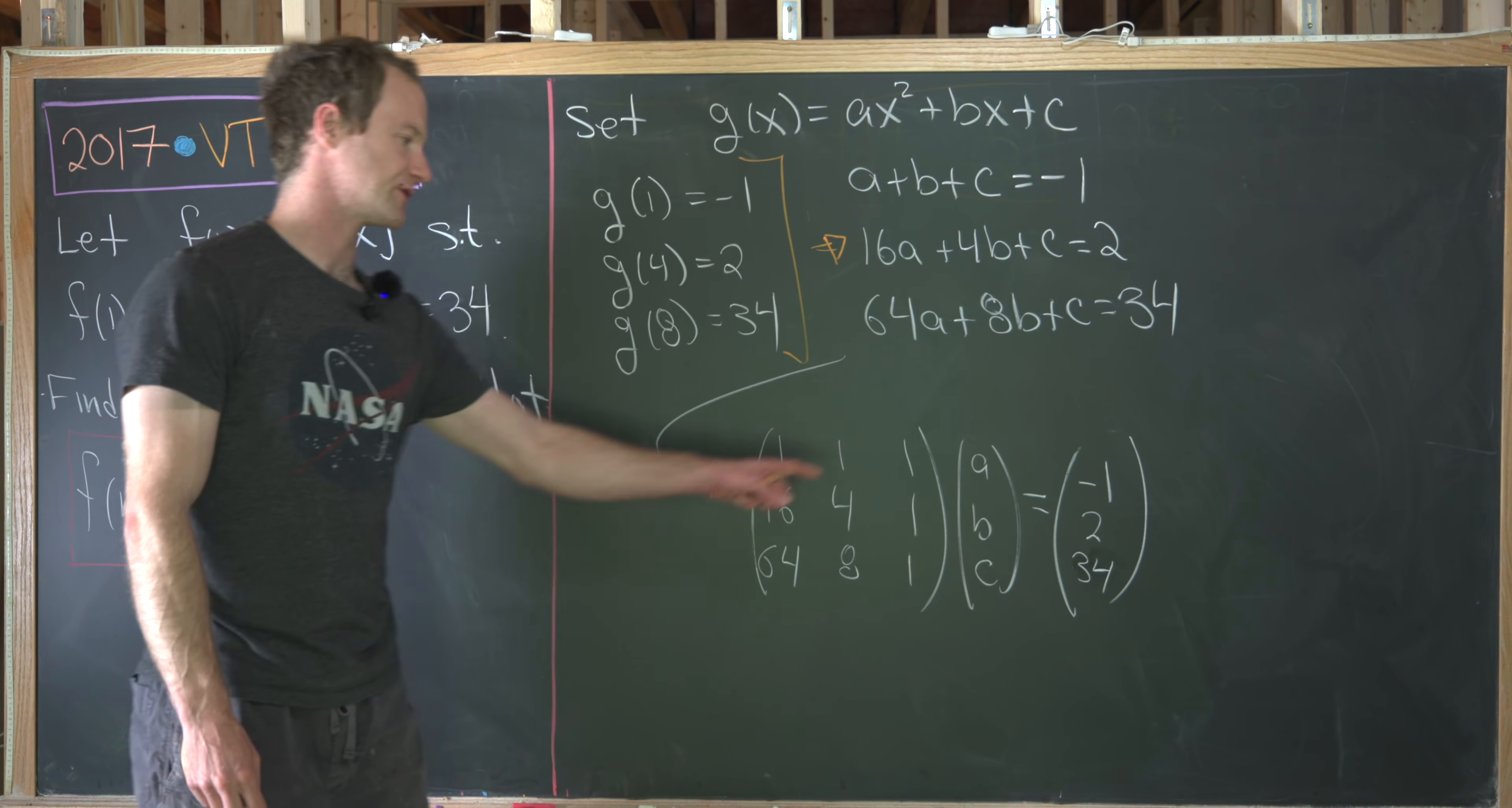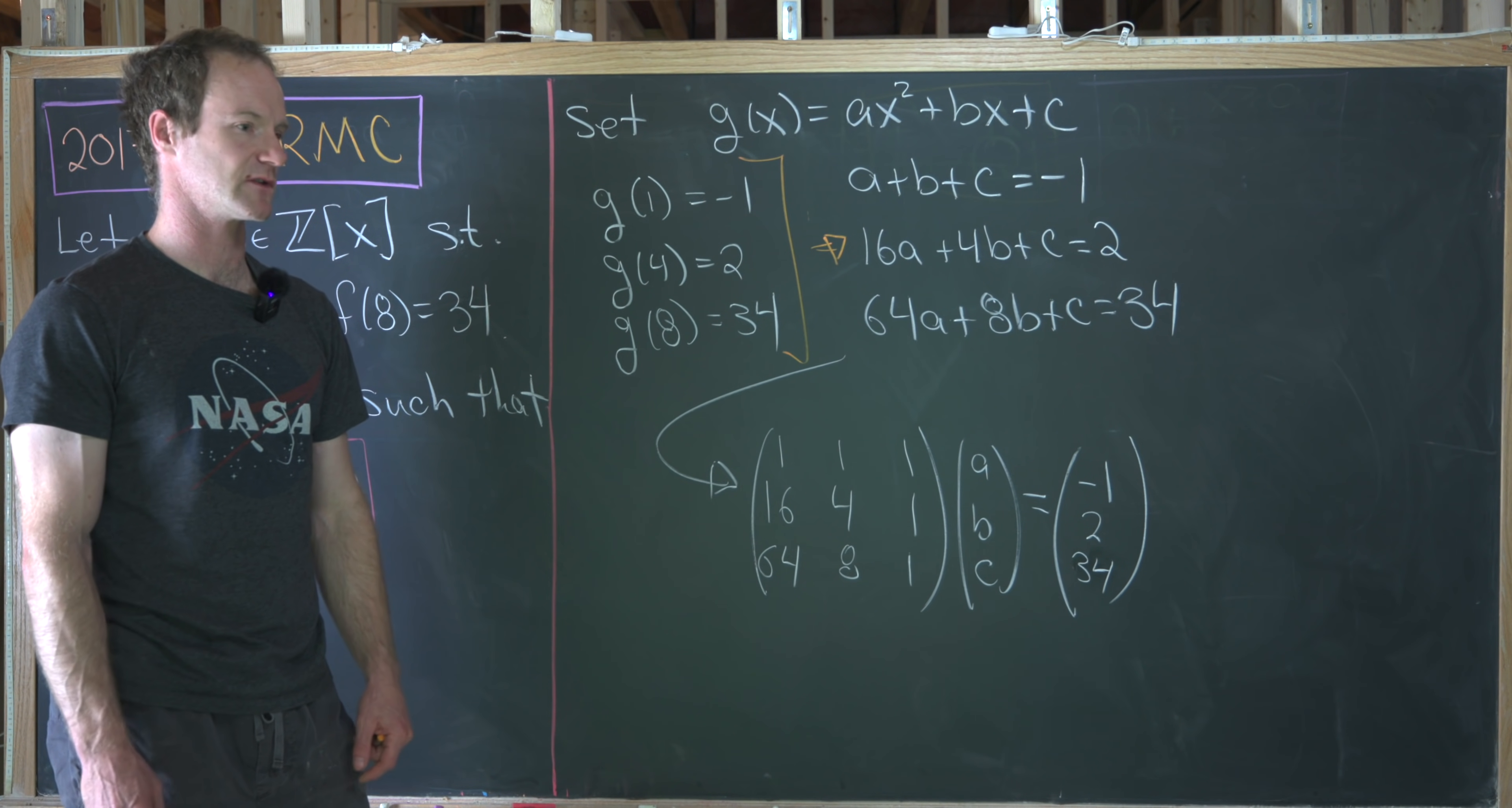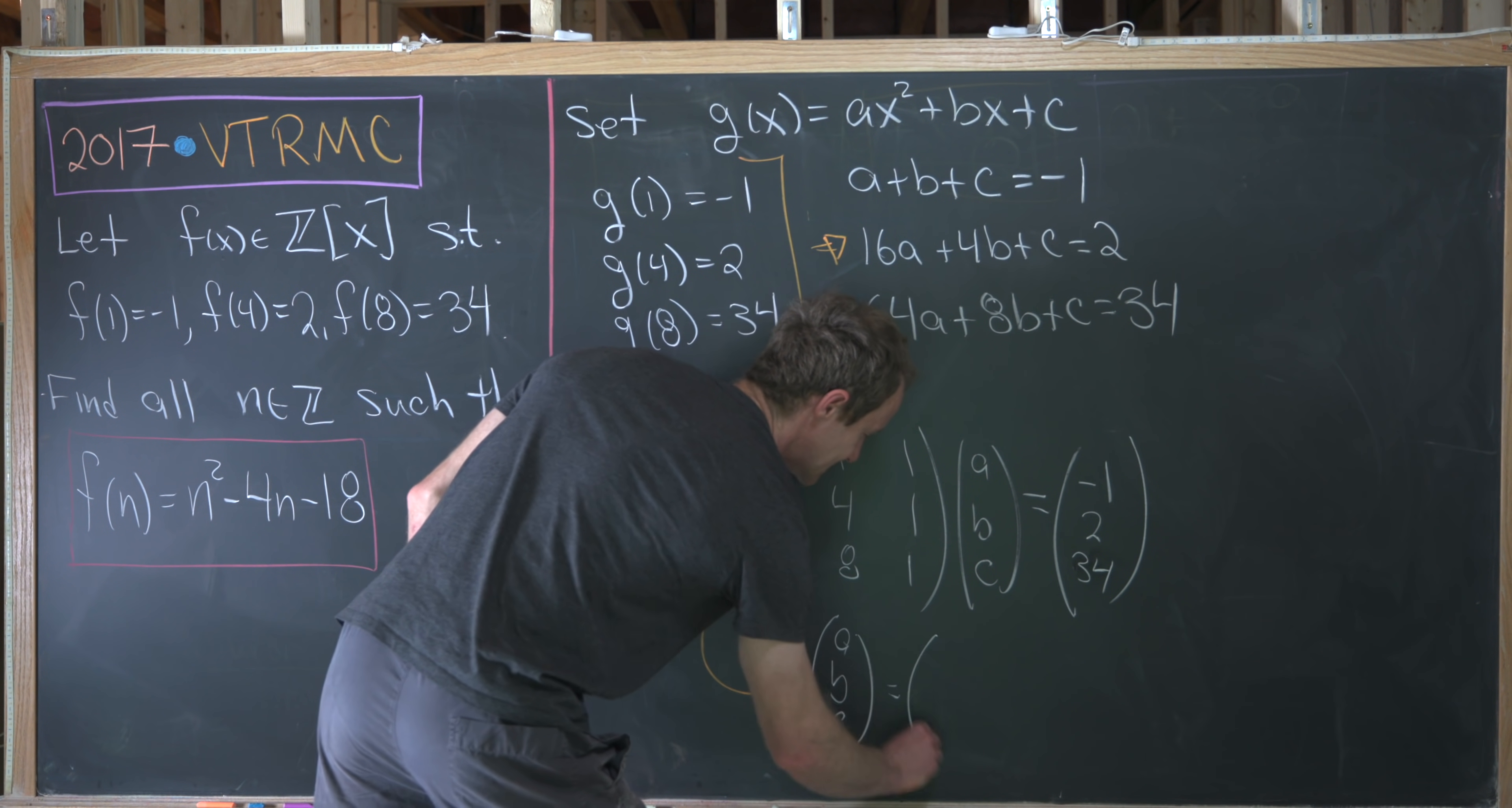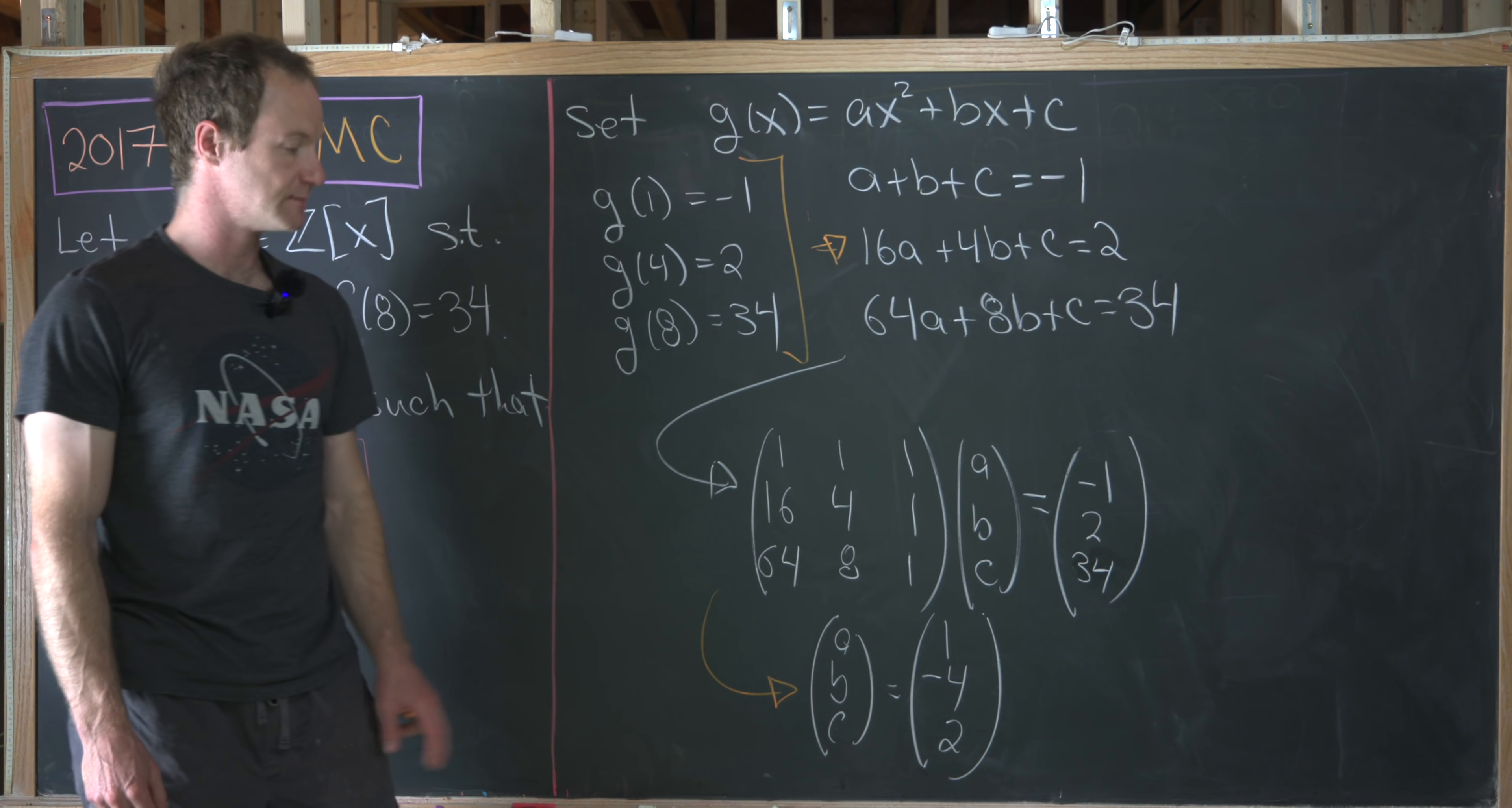From this point there are a bunch of ways to solve for a, b, and c. You could maybe turn this into an augmented matrix and do some row reduction, or maybe you could find the inverse of this matrix and multiply both sides by the inverse. I'll leave it up to you guys how you want to solve this exactly. But what you'll end up with is the vector [a,b,c] is equal to [1,-4,2]. So I'll let you guys check that however you want to solve that system of equations.